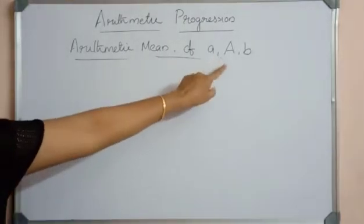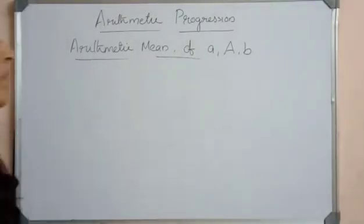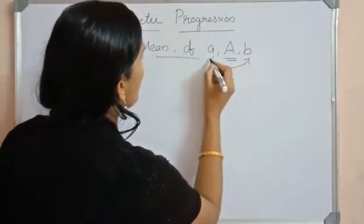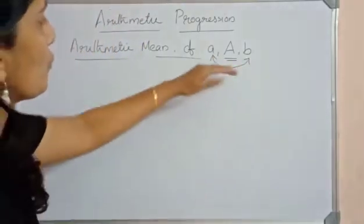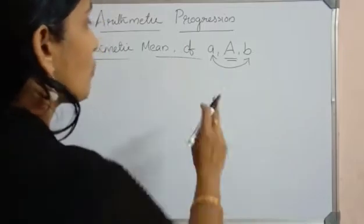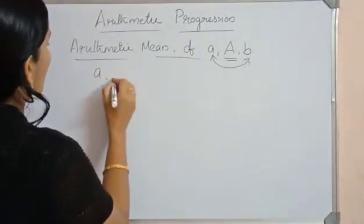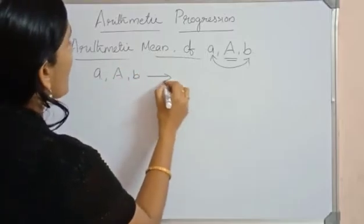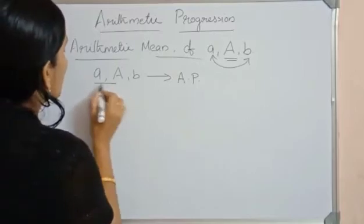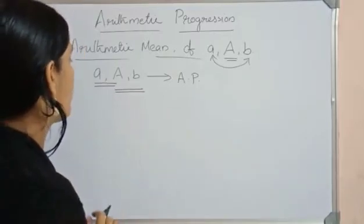If three terms A, A and B are given and these are in AP, then the middle term A is called the arithmetic mean between A and B. To find the arithmetic mean, we know that if three or more terms are in AP, the difference between the consecutive terms must be equal — that is the common difference.